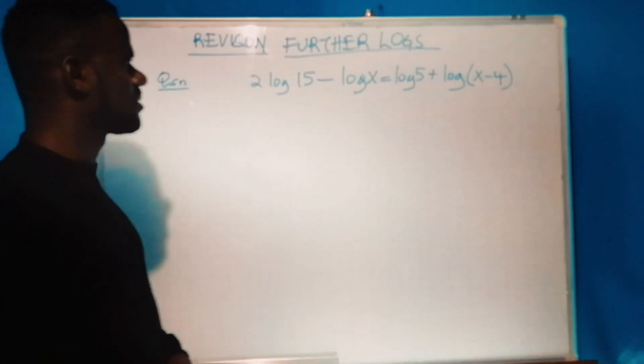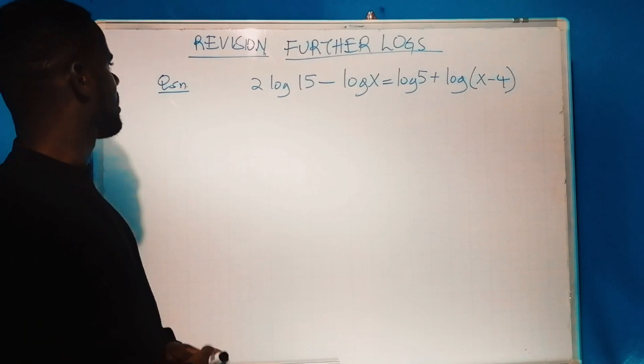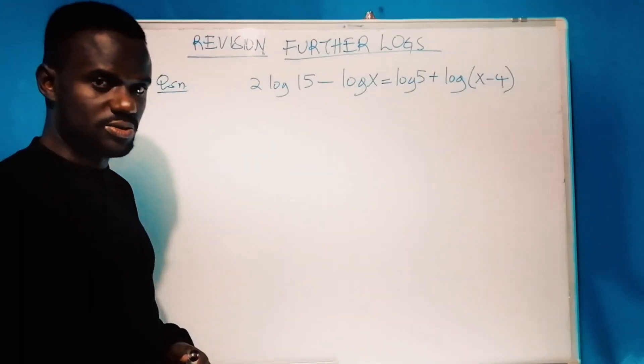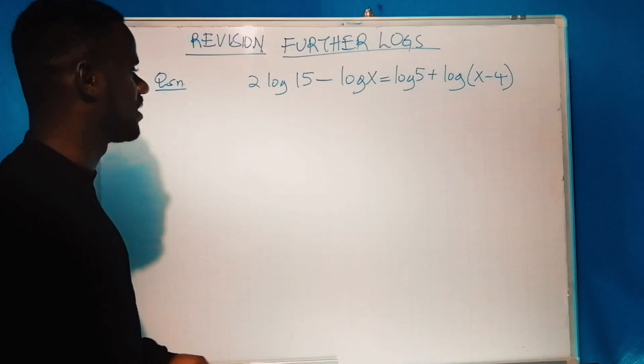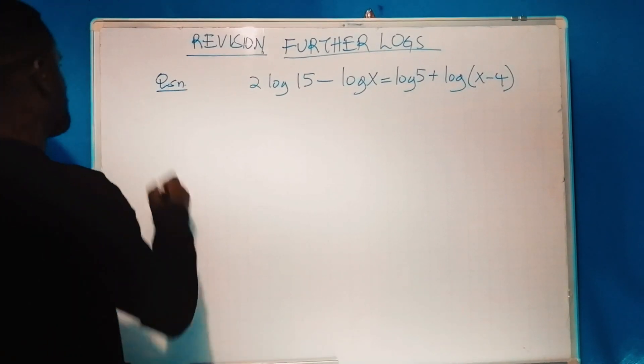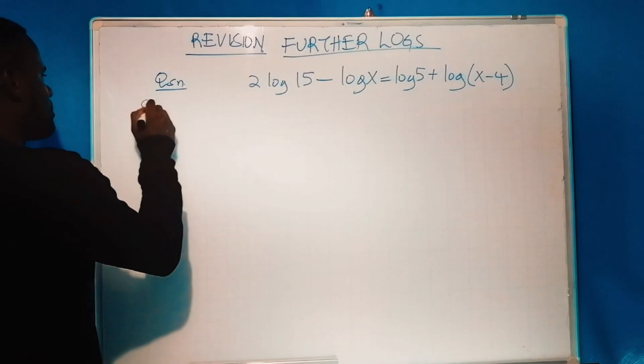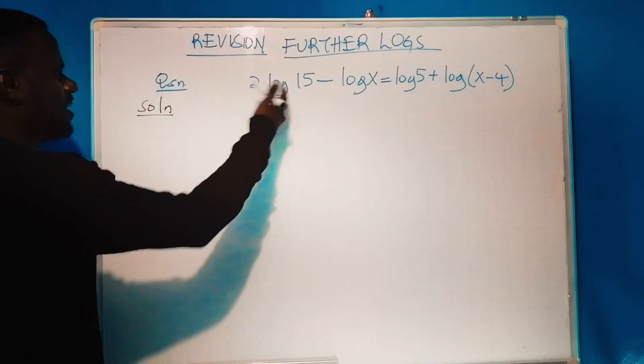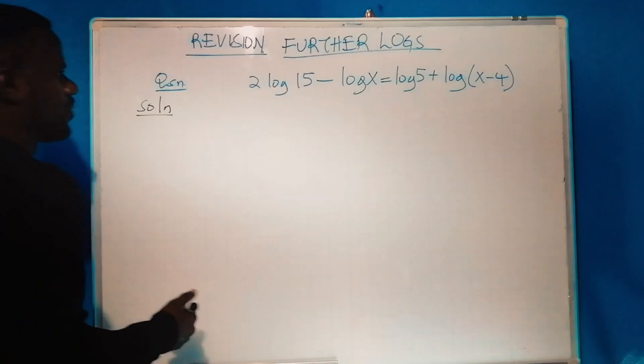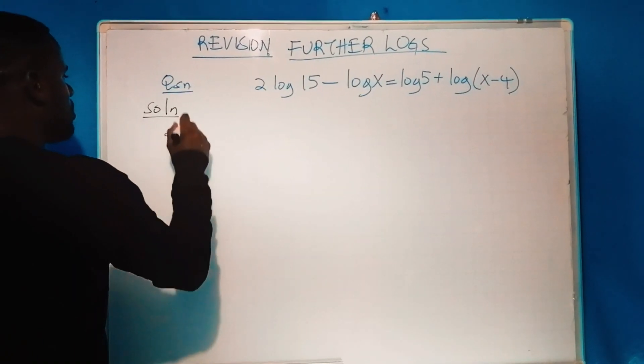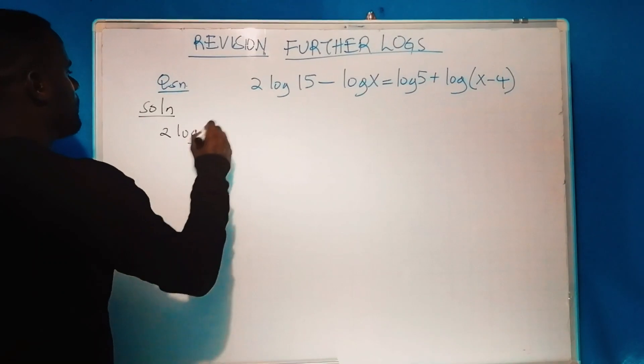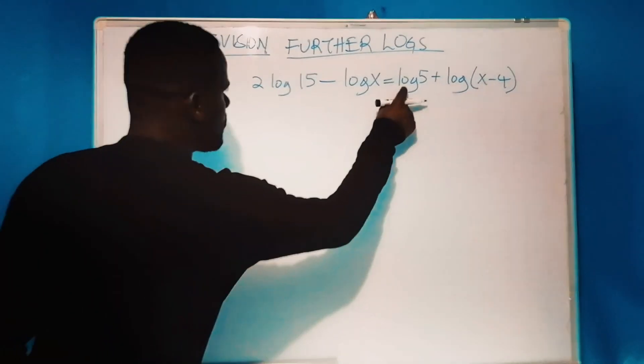What is the first step? How can I solve this question? The first thing I need to do is collect all the unknowns on one side. So for the solution, let us collect all the unknowns. We'll have 2 log 15. When log